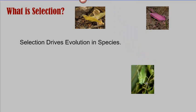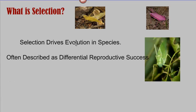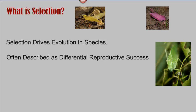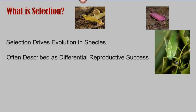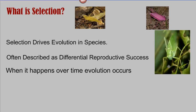When you go out and see katydids, almost all of them look green. If any of you have ever seen a pink or yellow katydid, you're very lucky — I spend a lot of time outside and I've never had the opportunity to see one. Another way to think of selection is that it's described as differential reproductive success: anything which causes things to reproduce at different rates. Green katydids have differential reproductive success compared to the yellow or the pink.